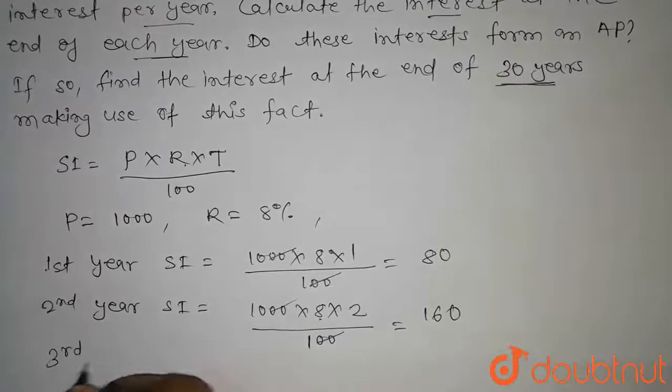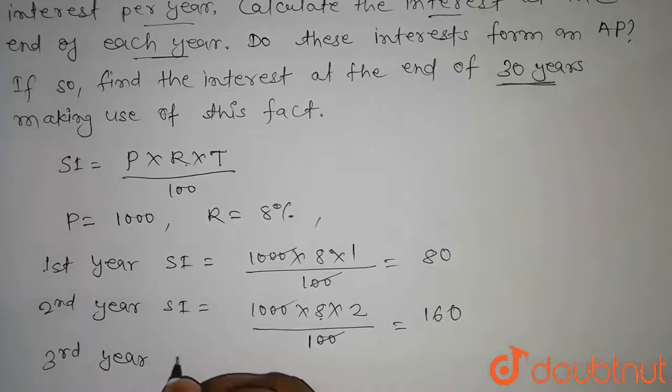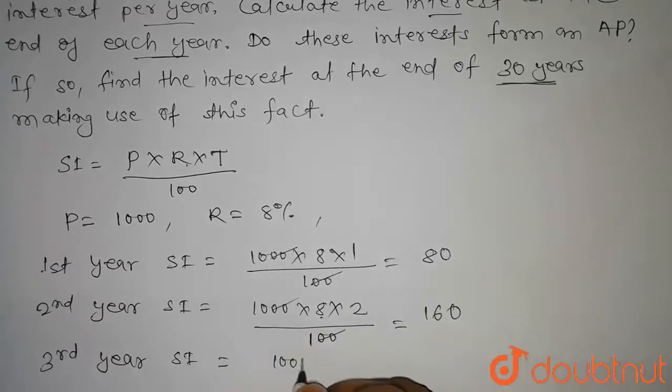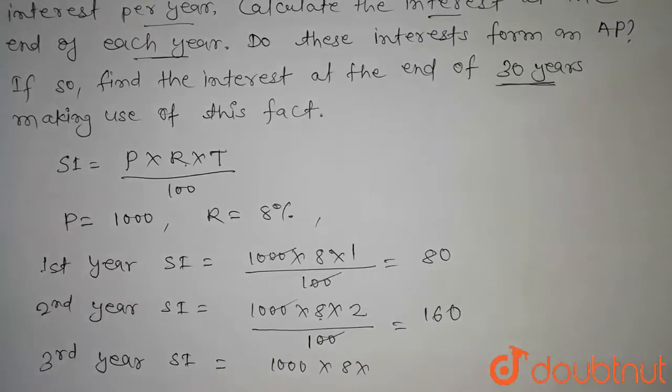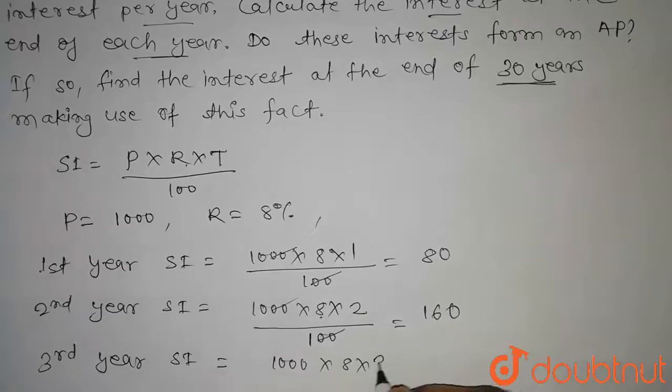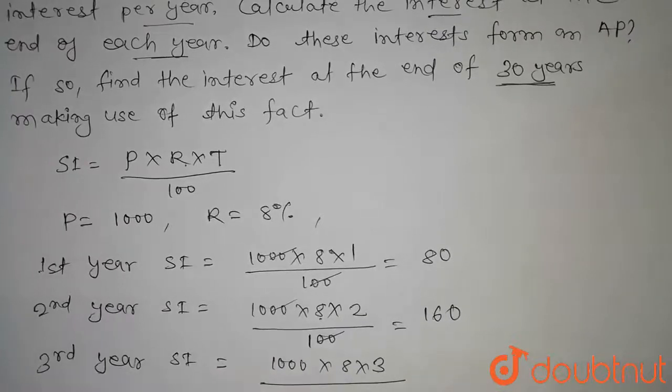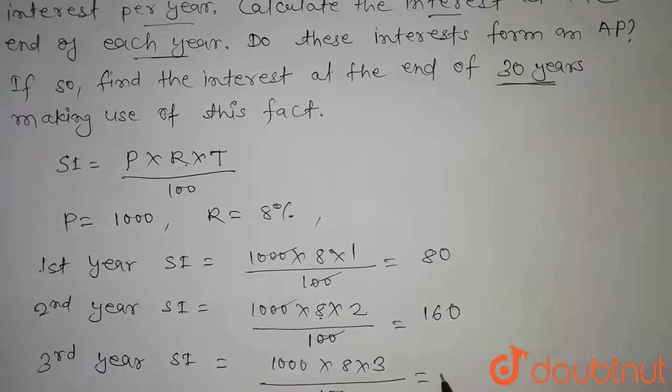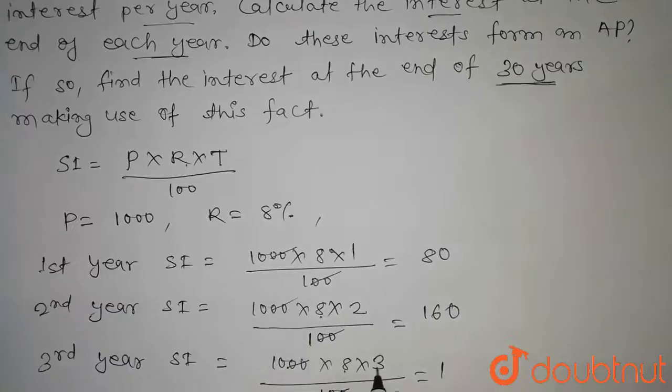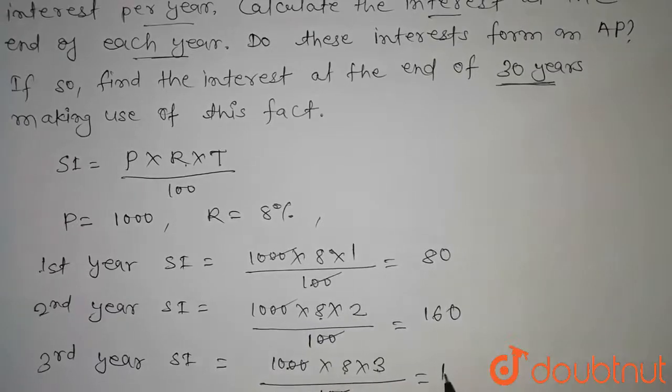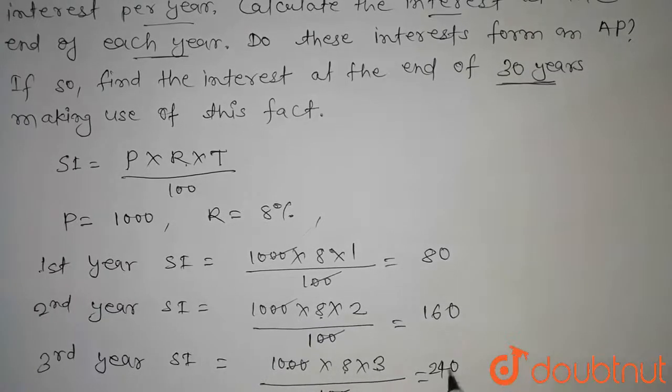Similarly for the third year, SI will be equal to 1000 into 8, and for the third year the time will be 3 years upon 100. On solving this we get 8 into 3, that is 24 into 10, so it will be 240.